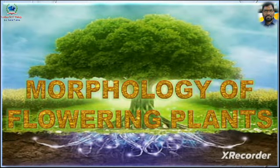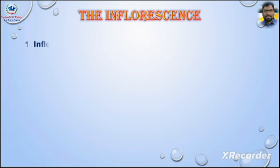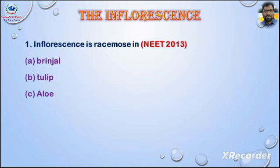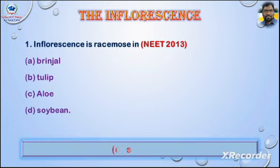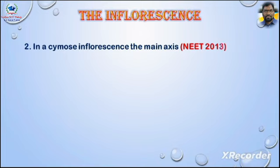Morphology of flowering plants — the inflorescence. Question number one: inflorescence is racemose in, asked in NEET 2013. Options are: a) brinjal, b) tulip, c) aloe, d) soybean. Answer is option d) soybean.